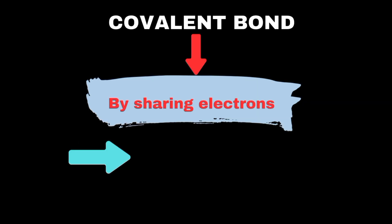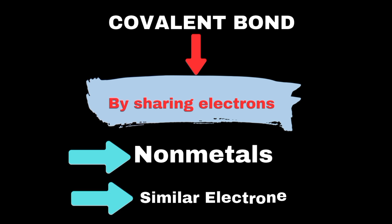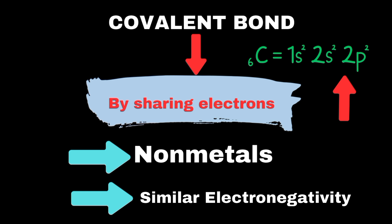Covalent bonds are formed when atoms share electrons to achieve stability. This type of bonding occurs between nonmetal atoms with similar electronegativities. The shared electrons allow each atom to fill its outer electron shell, creating a strong bond.